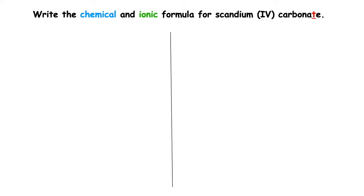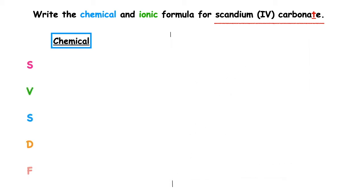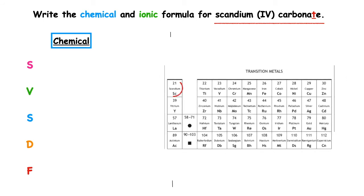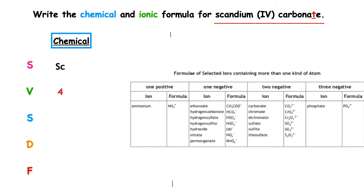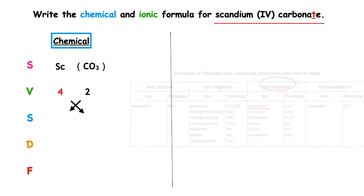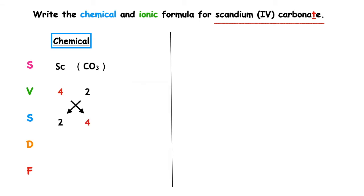This last worked example wants us to write the chemical and ionic formula for scandium IV carbonate. It ends in -ATE, so we're going to use page eight of our data booklet. We start off with our SVSDF. The chemical symbol for scandium is Sc. The valency given by the Roman numerals is four. Carbonate from page eight has formula CO3 — remember to keep a bracket around that — with a valency of two. Swap the valencies over; highest number both can be divided by is two. Two divided by two is one, four divided by two is two. So the chemical formula is Sc(CO3)₂.